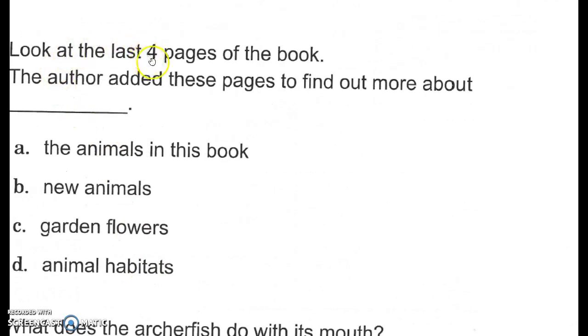Look at the last four pages of the book. The author added these pages to find out more about blank. A. The animals in this book. B. New animals. C. Garden flowers. Or D. Animal habitats.